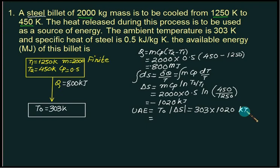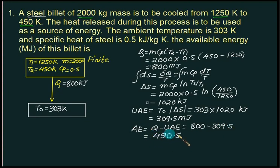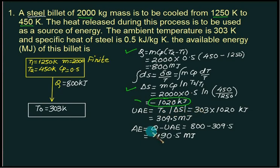Available energy equals total heat minus unavailable part: 800 megajoules minus 309.5 megajoules equals approximately 490.5 megajoules. So available energy is equal to 490.5 megajoules. The standard steps are: first Q, then ΔS, then unavailable part, and finally available part. Always remember to take ΔS as a positive value — that is why we take the absolute value.